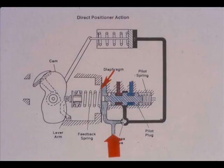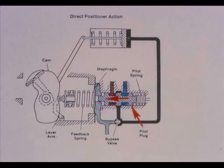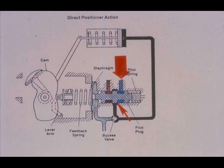For the direct acting positioner, as the input pressure increases, the diaphragm assembly moves to the left. The pilot plug follows the diaphragm assembly movement because the pilot plug is pushed by the pilot spring. As the pilot plug moves to the left, it connects the output circuit to the supply circuit, thus increasing the pressure on the actuator.